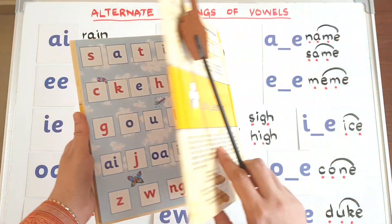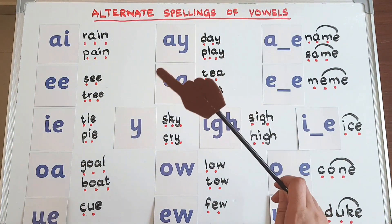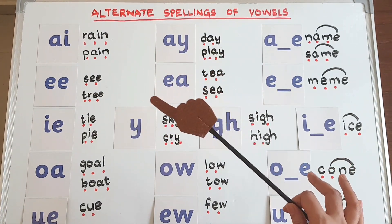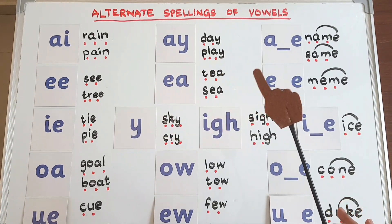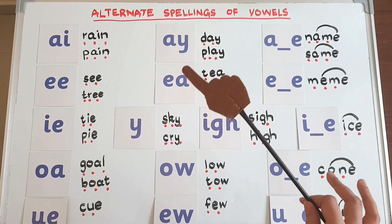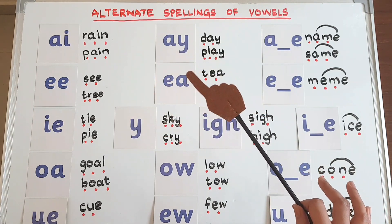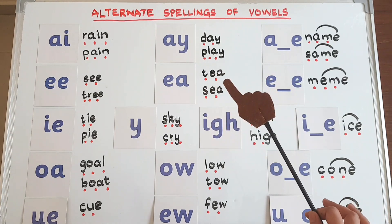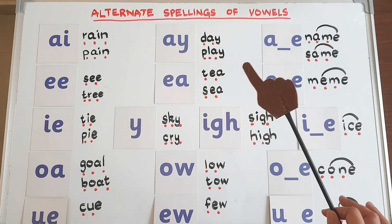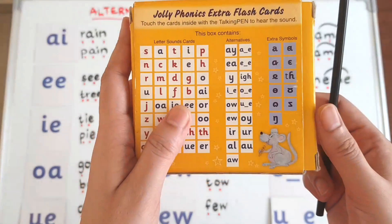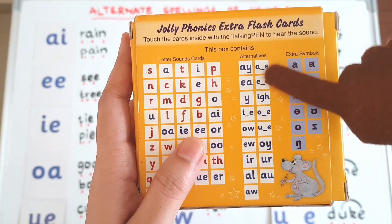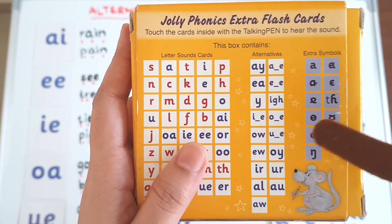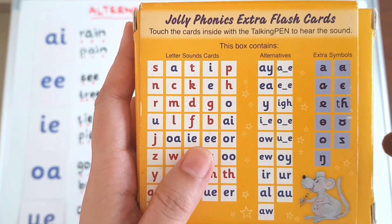In today's video I shall tell you about the alternative spellings of vowels. Please do not think that it's too difficult for the child — it's a tested and tried method of teaching and the results are amazing. Once the child is good in all the previous 42 sounds, here are the new spellings they need to know to progress further. There are 17 alternate spellings in total, but in today's video you will only find the spellings that are the vowel alternatives.